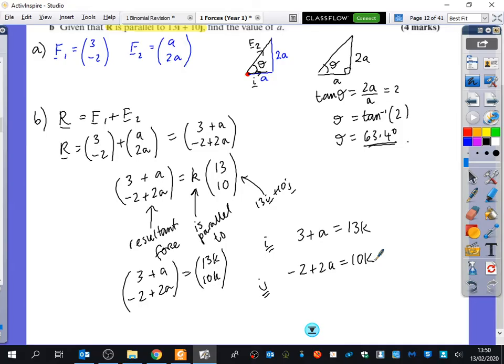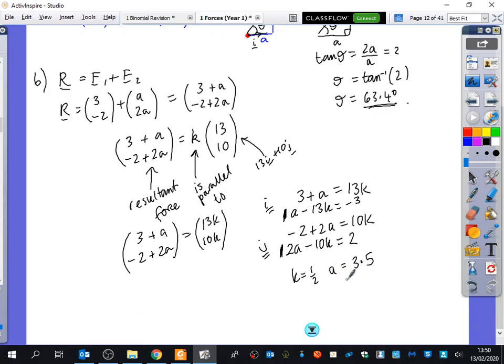And then you can either solve it like old school, or you can do it using a calculator method. I don't really mind what you end up doing. But if I do it with a calculator method, you'll get A minus 13K equals minus 3, 2A minus 10K equals 2. If I put this one and this one in the calculator, you end up that K is equal to a half, and A is equal to 3.5. So that tells me that the answer is A equals 3.5.